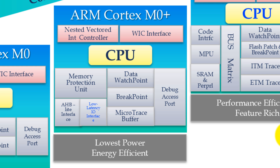ARM Limited added new features in the Cortex-M0+ over the M0 series, such as a Memory Protection Unit, low-latency I/O interfaces, and the Micro Trace Buffer. The Memory Protection Unit enables you to partition memory into regions and set individual protection attributes for each region. You can also partition the memory address space into 16 regions of variable size. The low-latency I/O interface provides Harvard-like access to peripherals and improves cycle efficiency for I/O access.